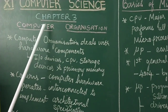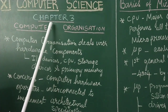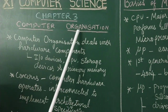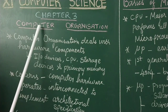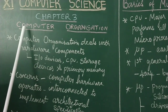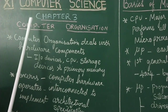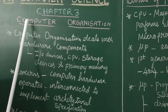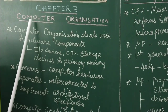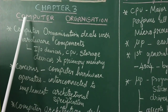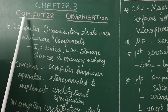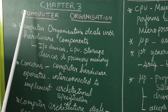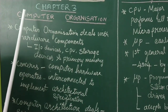Welcome students. Today we are going to see about Chapter 3, Computer Organization. In this chapter we are going to see the organization of computer components and how they are interconnected. To know about the processors and their characteristics. To learn the importance of memory devices and their roles. To explore the RAM, ROM and how they are differentiated from each other.